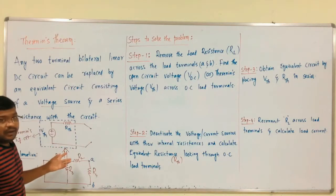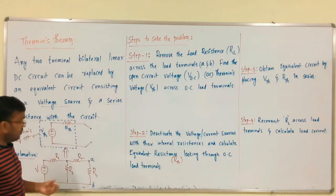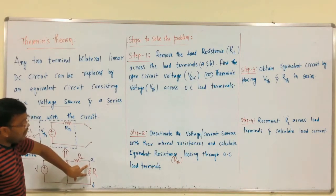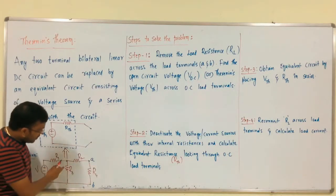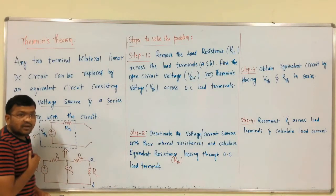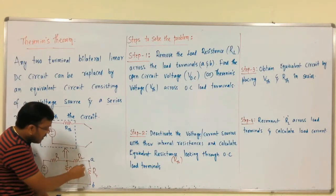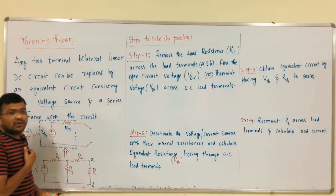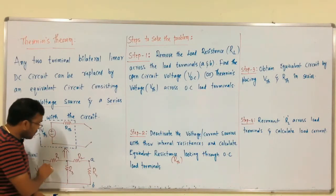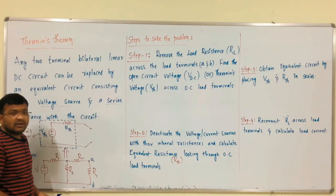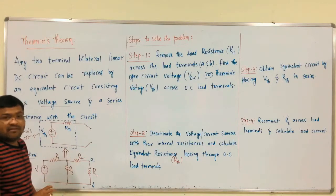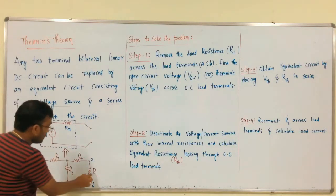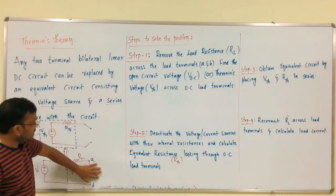We have to get the current through this circuit. For example, the examiner wants to know the value of the current through a particular branch — for us this is load resistance. Or if he wants the current through another branch, for us that is also the load. It should be a resistance, a voltage source, or a current source — it should be any element. For us, whatever branch is specified, that is the load resistance.